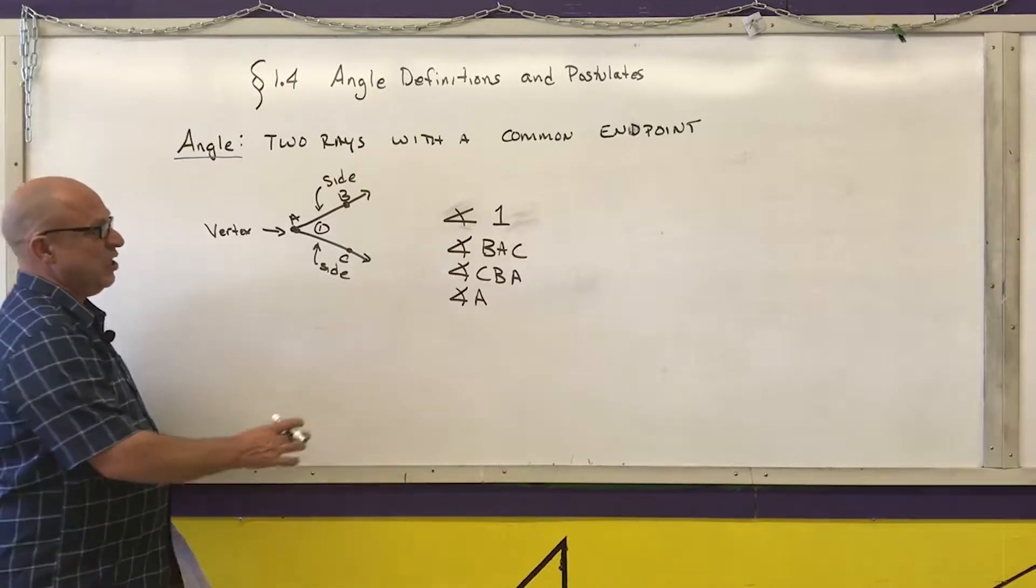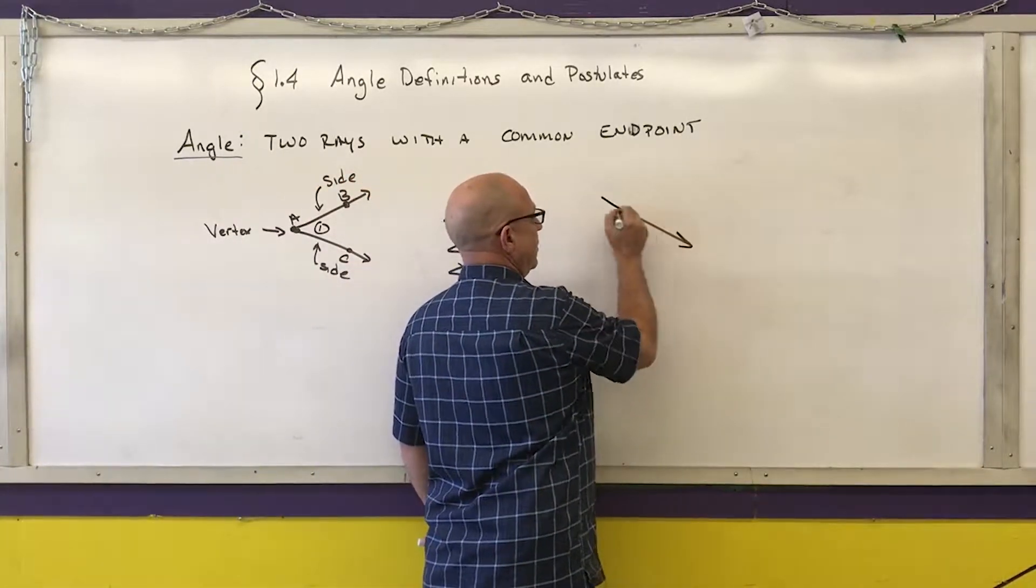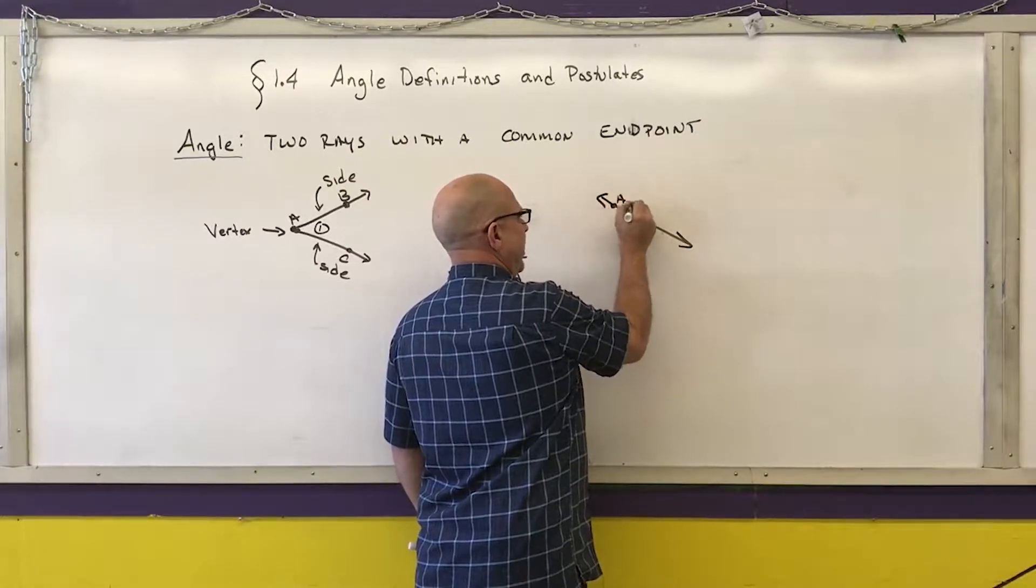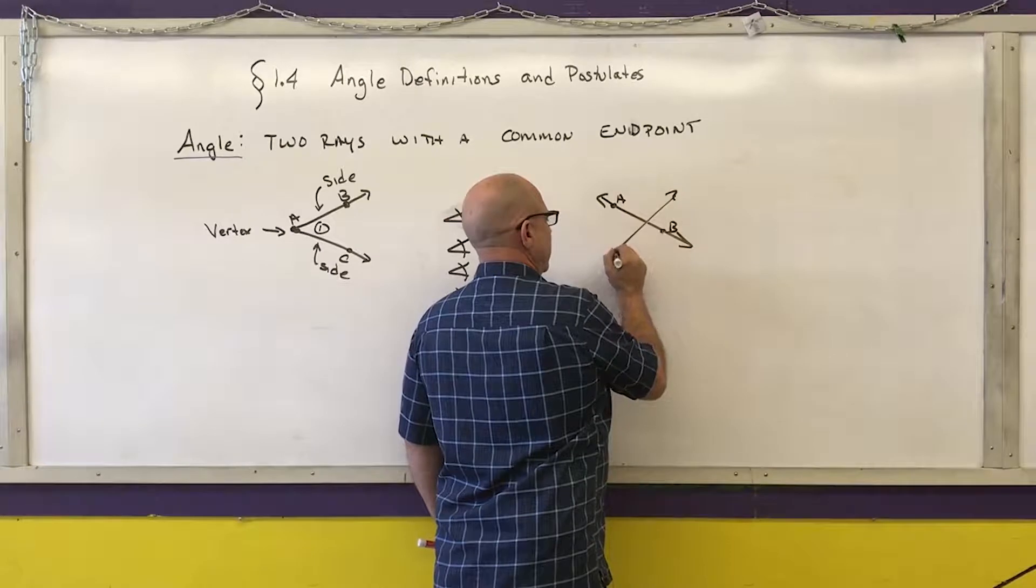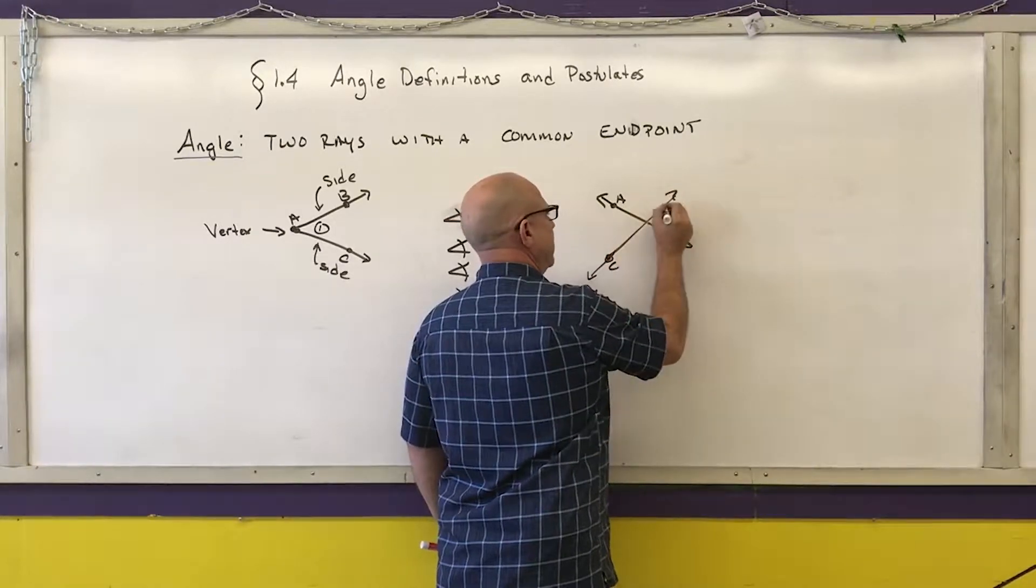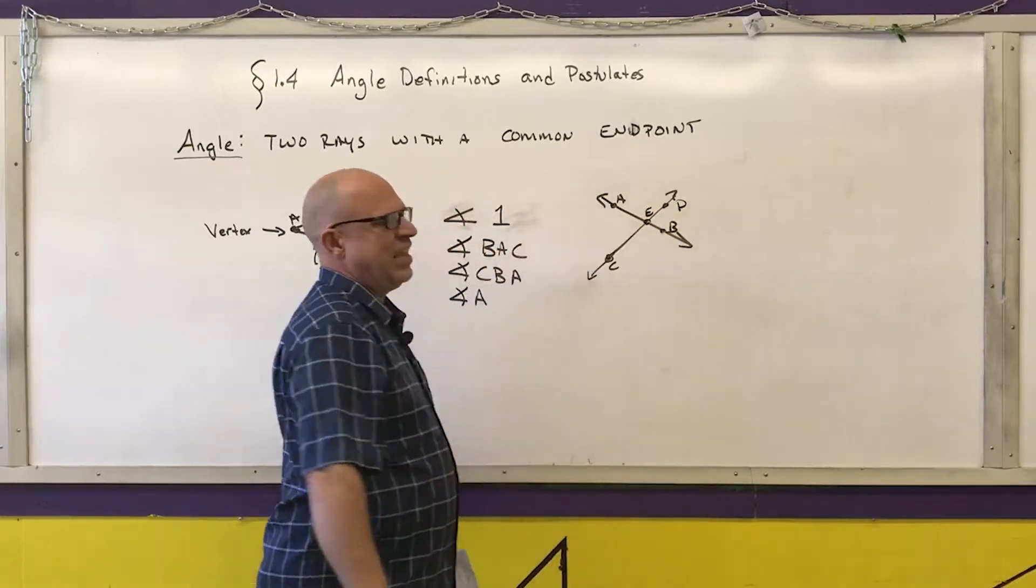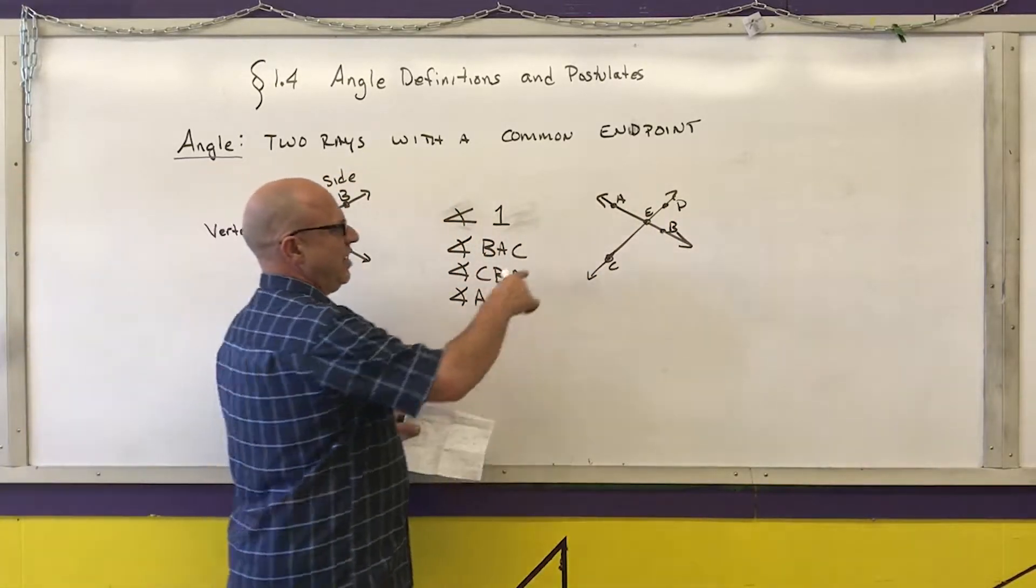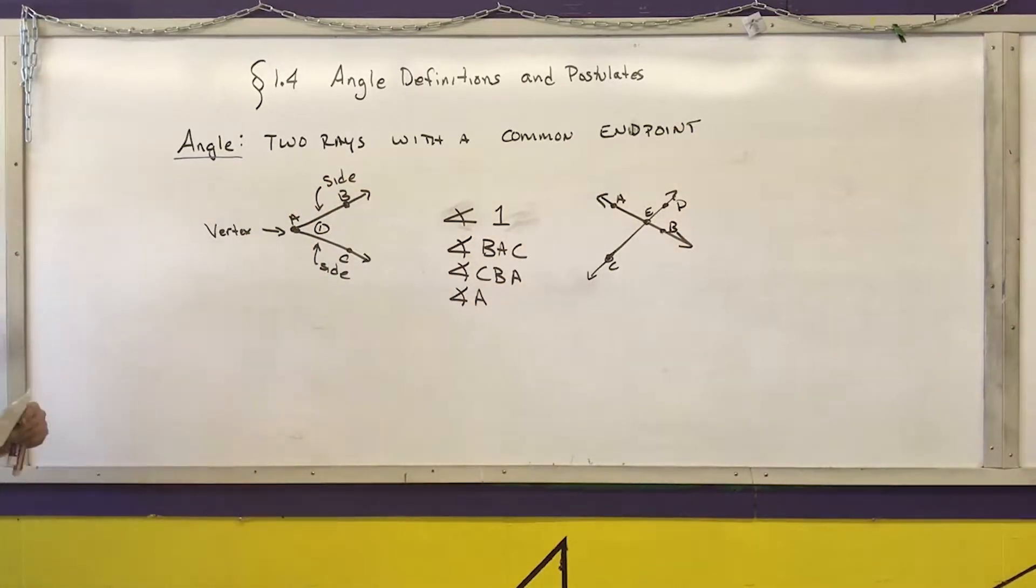Where I cannot use a single letter is where it's ambiguous. For example, if I go A, B, C, D, E, I could not name any angle angle E because it could mean any one of those four angles where I have those rays with common endpoints.